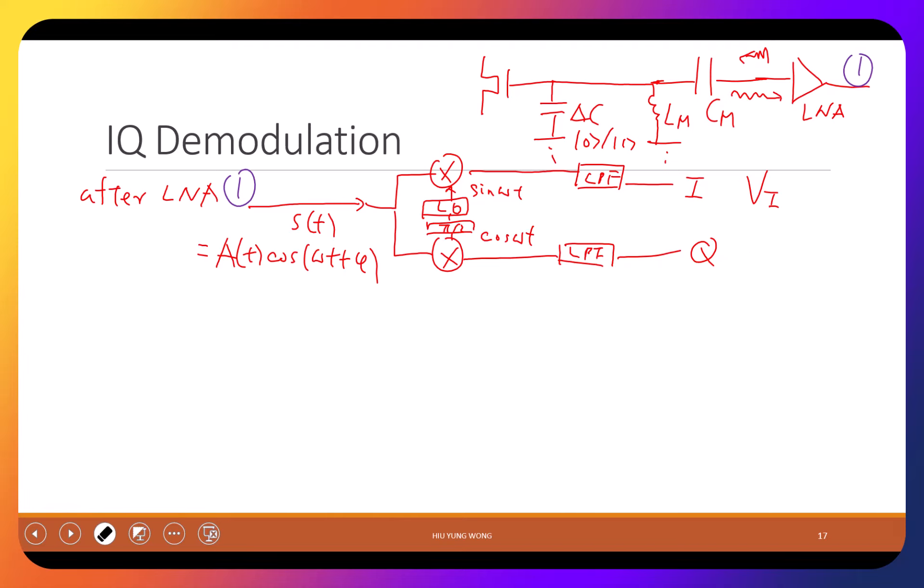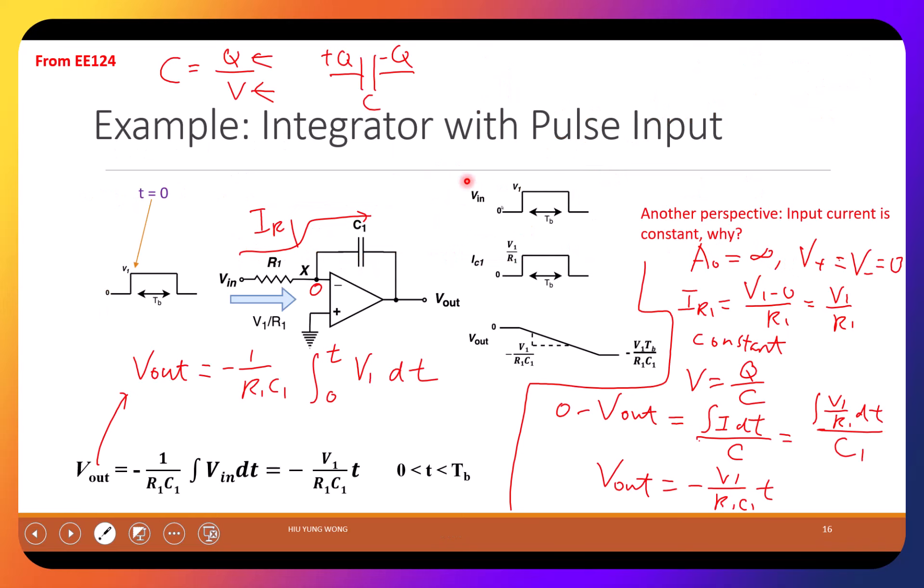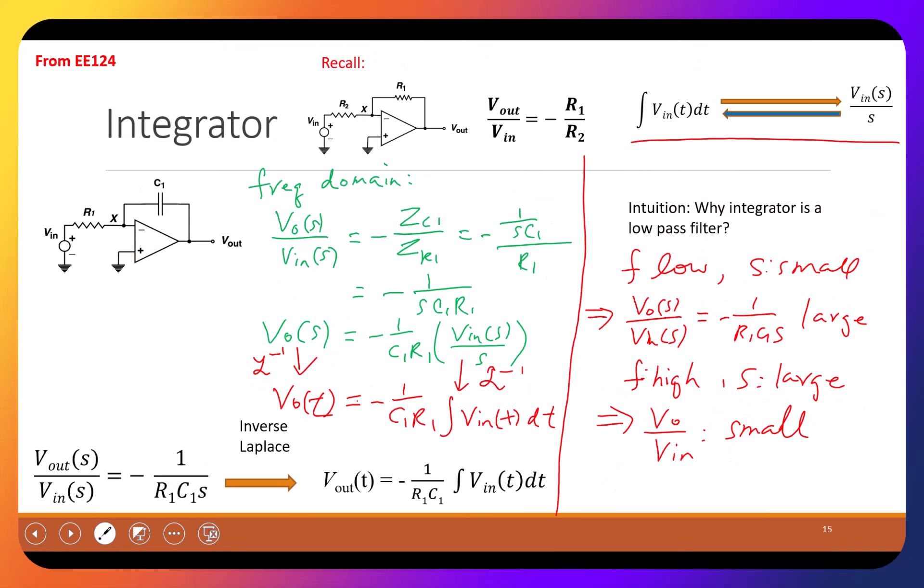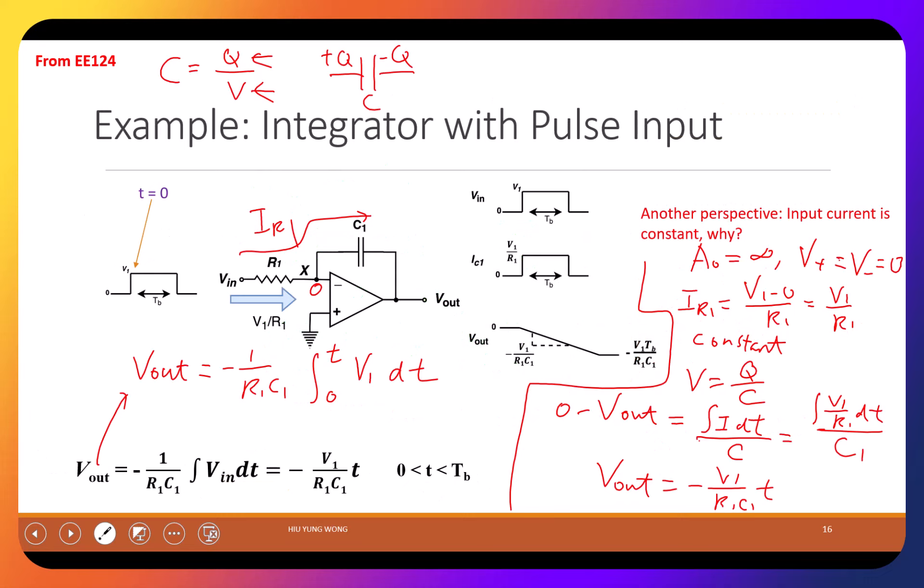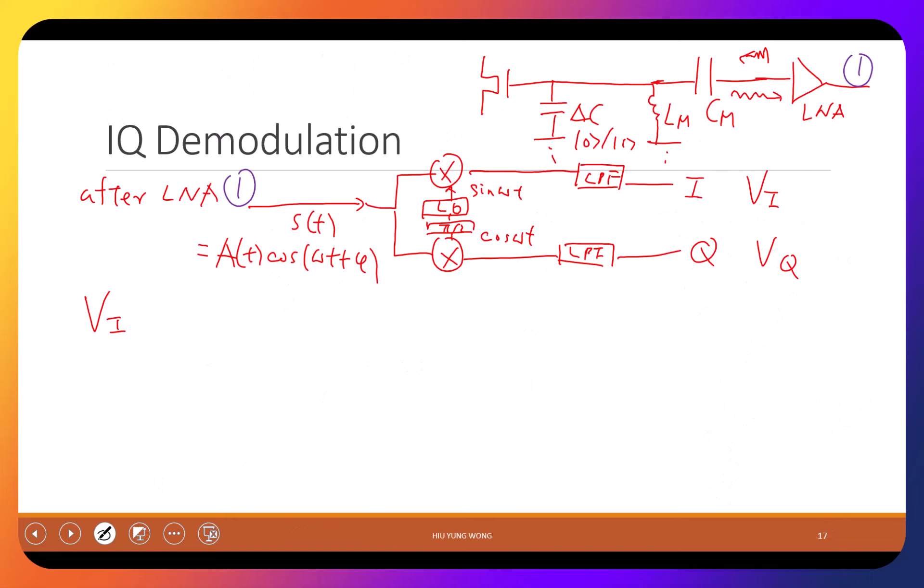So after the mixer, let's look at the I part first. So if we look at here, VI is a voltage, this is VQ. Let's look at VI. What is VI now? A low pass filter is just an integrator. That's what I'm trying to say there. Kind of forgot my purpose. Where is the low pass filter? Anyway, low pass filter is the integrator.